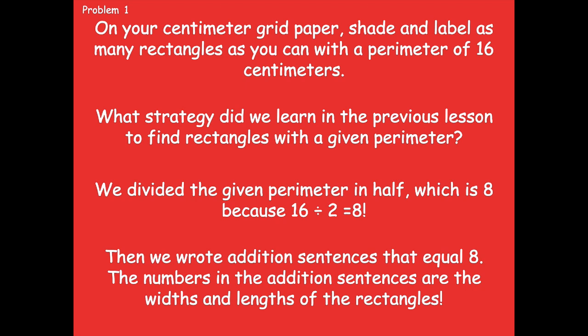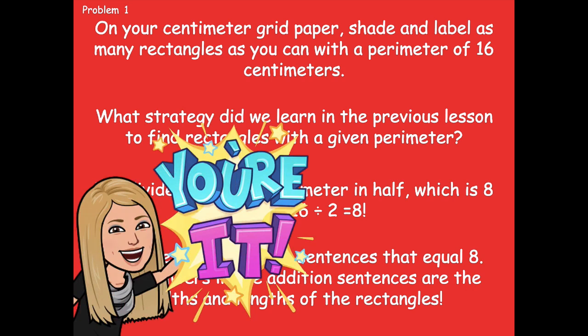Remember, you are taking the perimeter and cutting it in half, which gives us 8. Then you're finding all the pairs that add up to 8 — start at 1: 1 plus 7 equals 8, then go to 2, and so on until you run out of pairs. You don't have to copy the same ones, like 1 plus 7 and 7 plus 1, because they're really the same rectangle just turned sideways. Pause the video, jot down the addends that equal 8, then click play when you're ready.